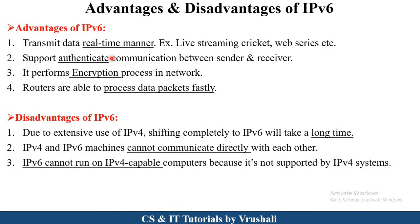The advantages of IPv6: it transmits data in real time. Many satellites connected in a network use IPv6 to stream live cricket matches and web series. IPv6 also supports authenticated and accurate communication between sender and receiver. IPv6 provides more security compared to IPv4 because it performs encryption and decryption processes in the network. IPv6 is also able to process particular data packets quickly — sending and receiving operations are performed fast and accurately.